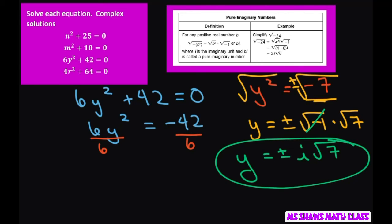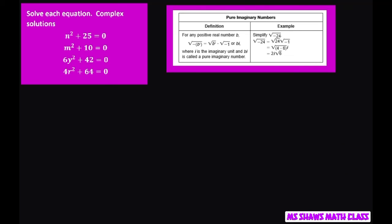And the last one's similar. Let's see what we have here. 4r squared plus 64 equals 0. Subtract the 64 from both sides. Divide both sides by 4 and that gives you negative 16.